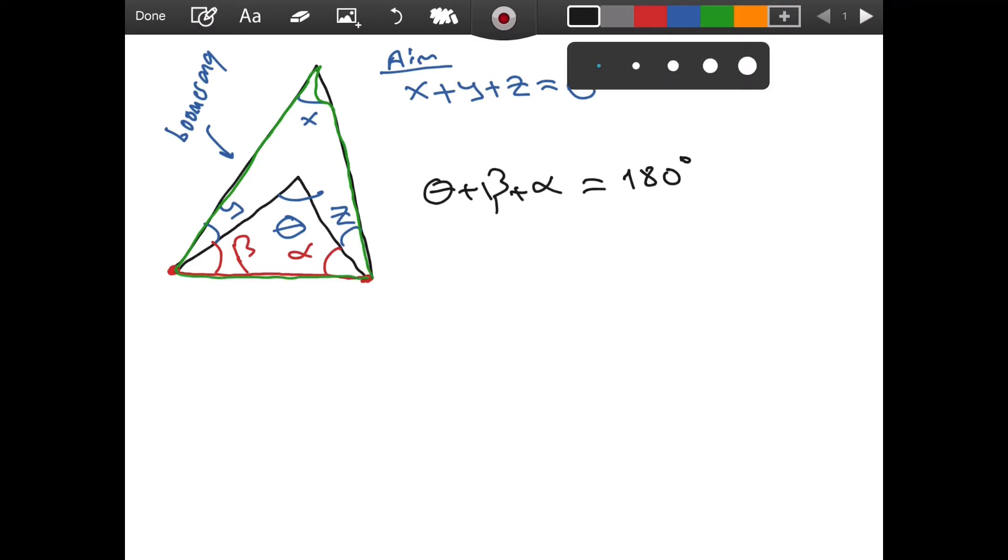And if we consider the green triangle—the green one, the bigger triangle—well, even though it is a larger triangle, it is still a triangle, right? So if we add all of its interior angles, their sum will be 180 degrees. So let's write that one as well.